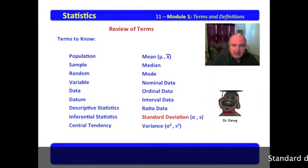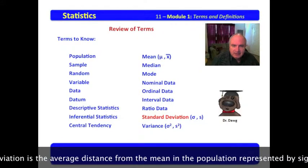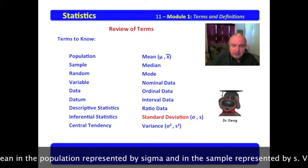Standard deviation is the average distance from the mean. In the population represented by sigma, and in the sample represented by s.